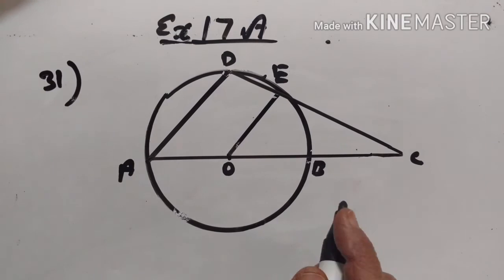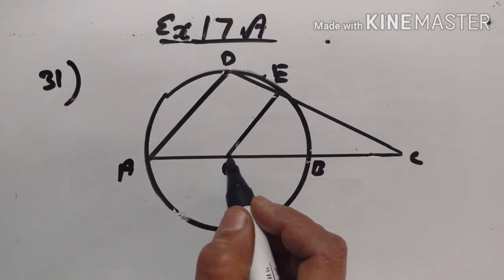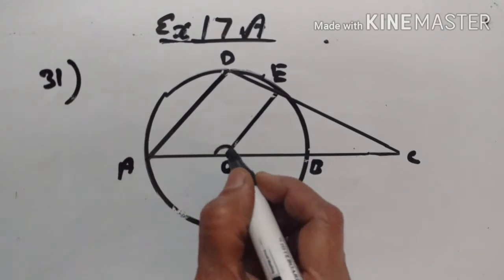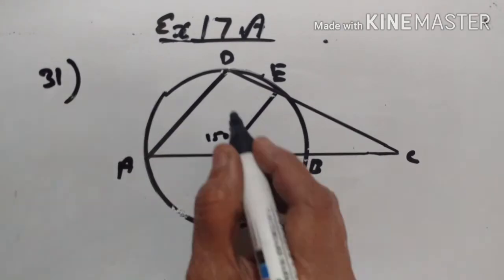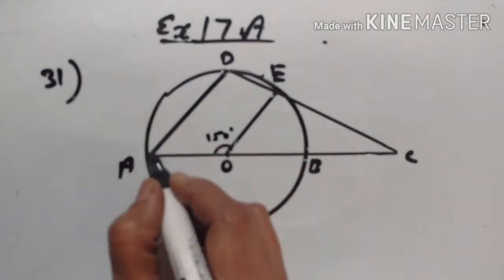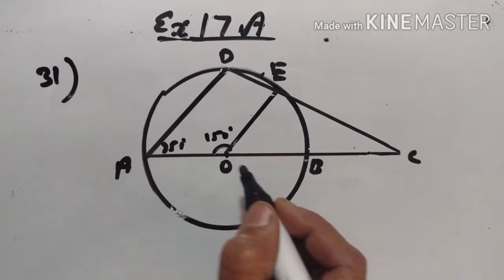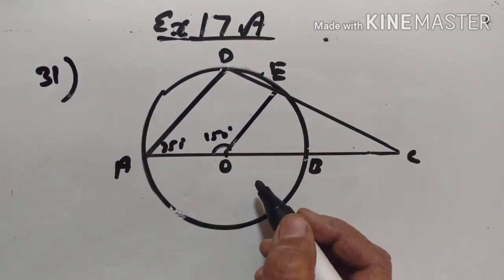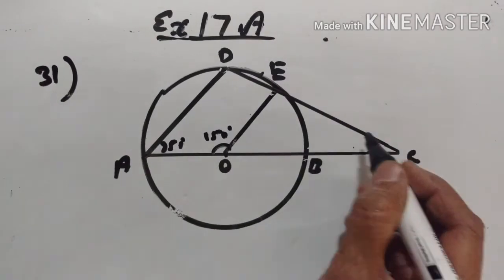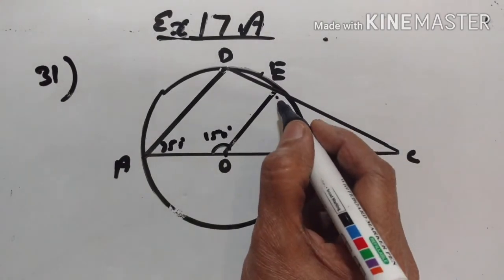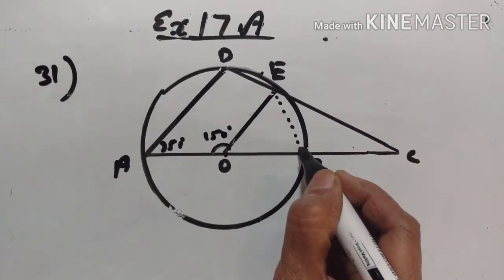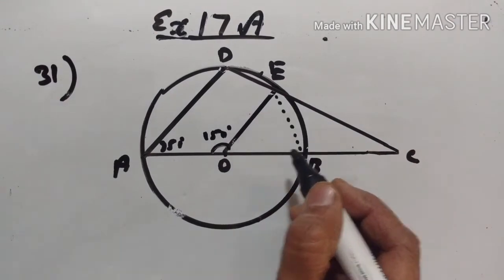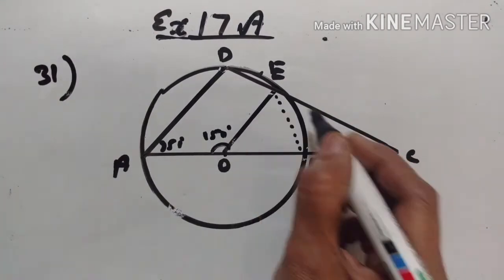Problem number 31. In this figure, O is the center of the circle. Angle AOE is equal to 150 degrees, and angle DAO is equal to 51 degrees. We need to calculate the sizes of angles CEB and OCE.